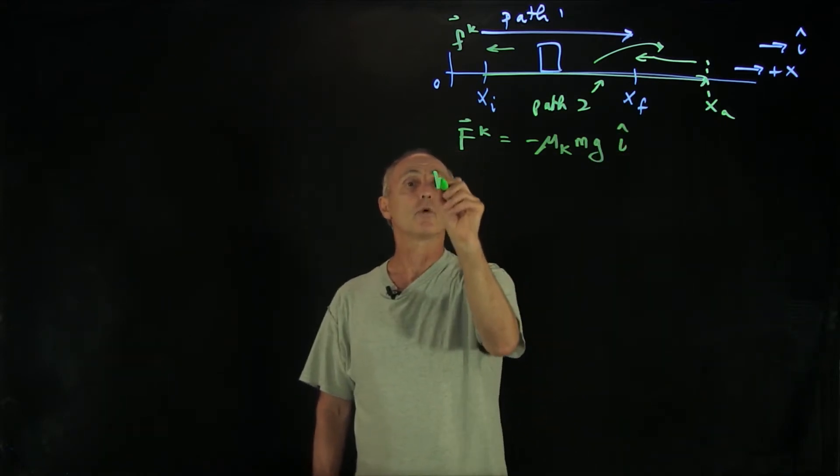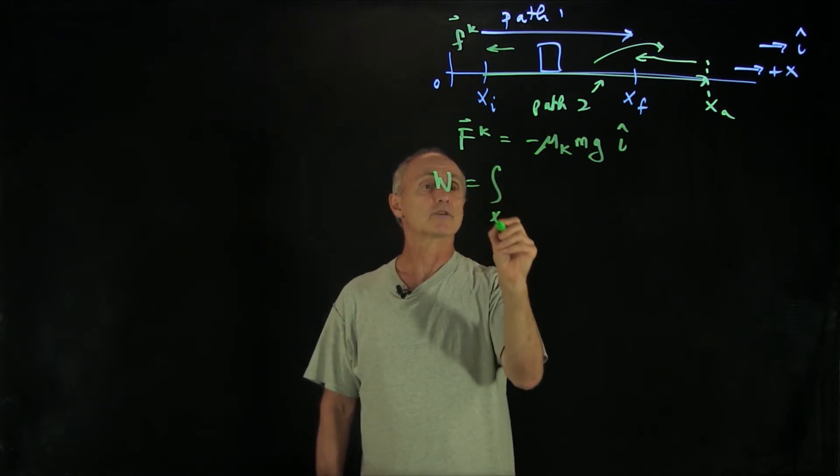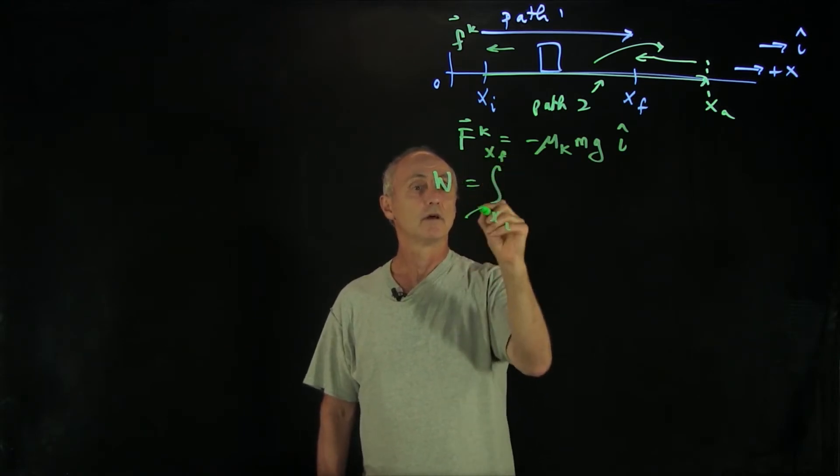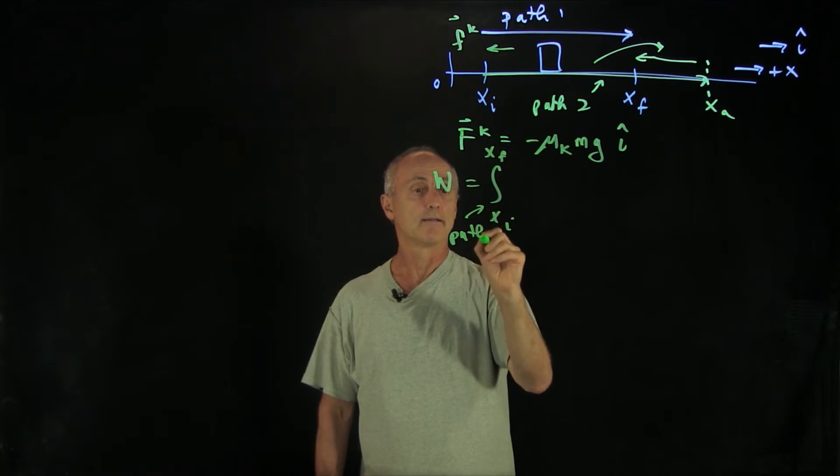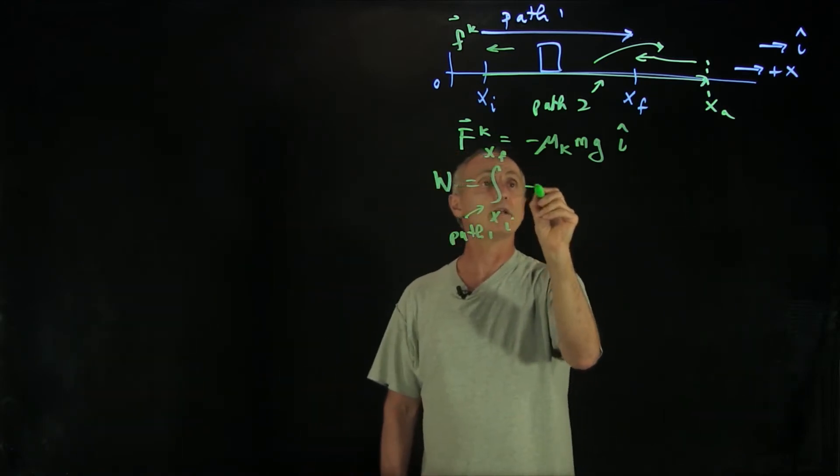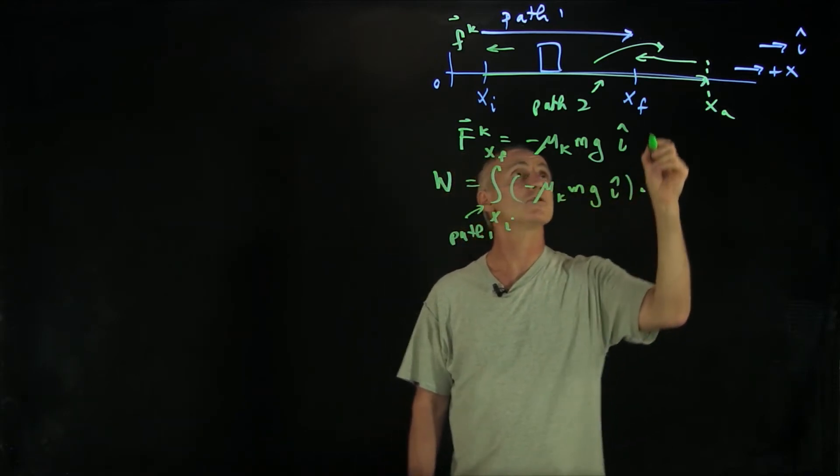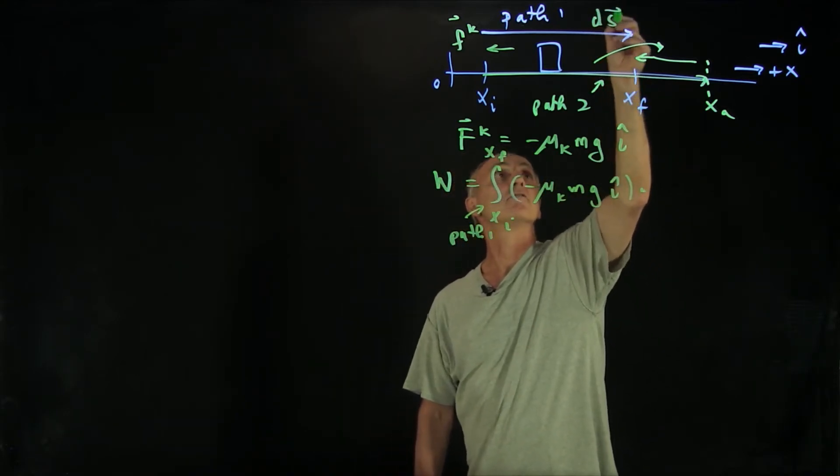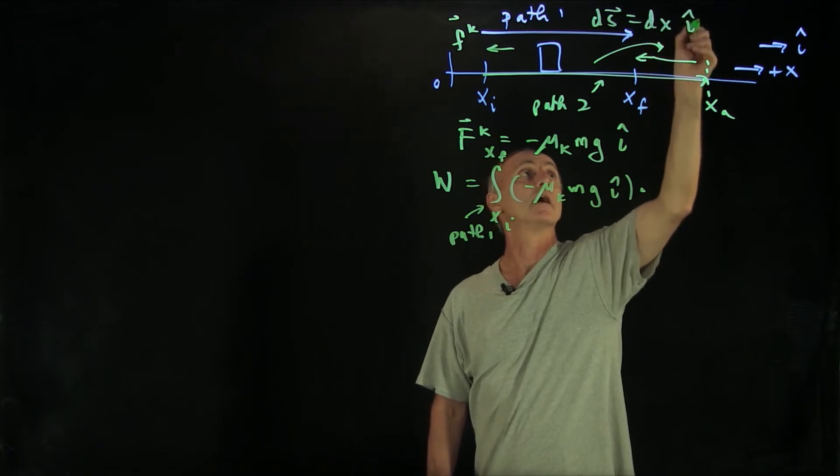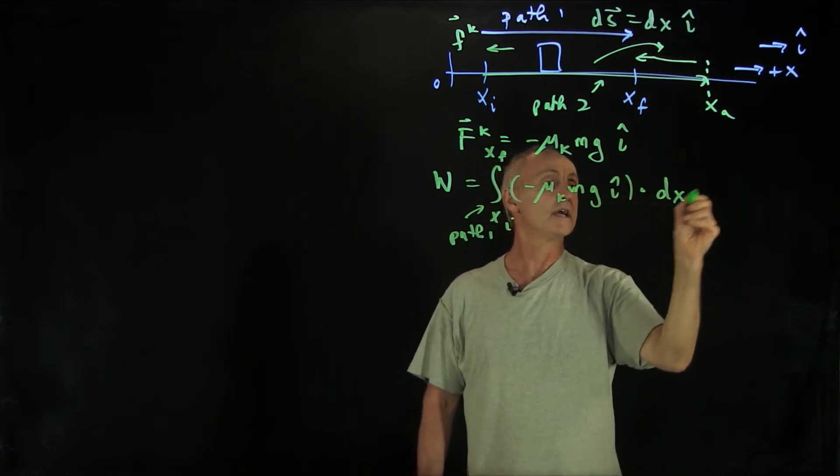When we do the integral for the work, from x_initial to x_final, this is path one. Then we have minus μ_k mg i hat dotted into—what is the ds for this path? It's simply dx i hat.